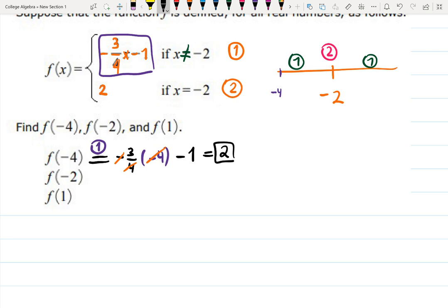What happens at f(-2)? f(-2) is exactly over here, so that's going to be case number 2. At -2, when x = -2, y or output is 2.